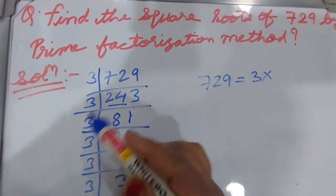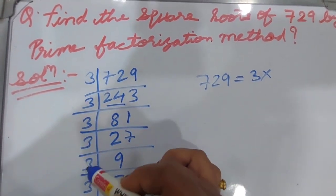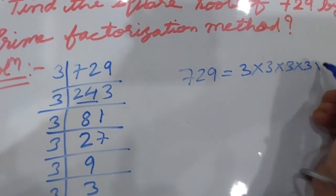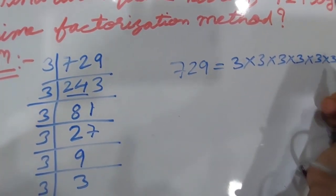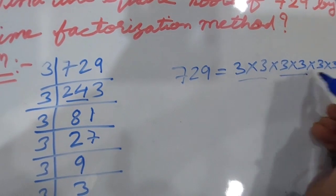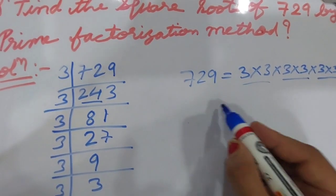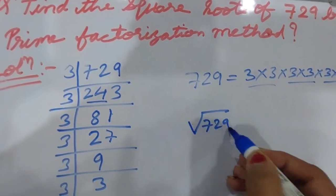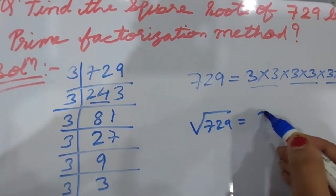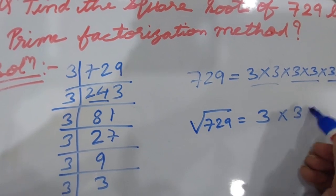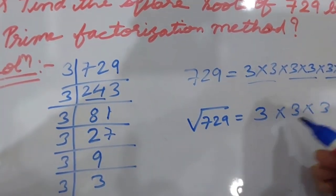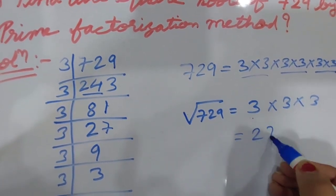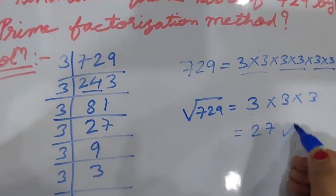When we take the prime factorization we make pairs. There are six threes total: one, two, three, four, five, six. We make the pairs and take the square root. One pair gives three, another gives three — common factor is three. Three times three is nine, nine times three is twenty-seven. That is the answer.